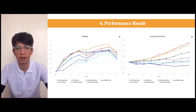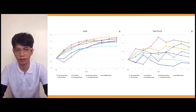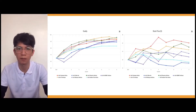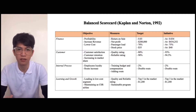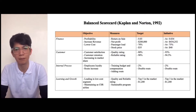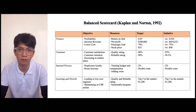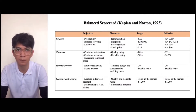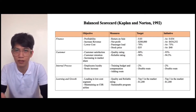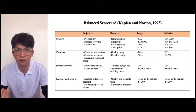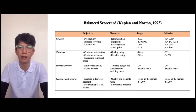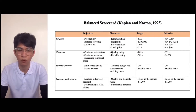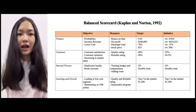Here is our performance result: reliability rank 1, cumulative net profit always rank 1, and our quality always top 3. Our stock price is also on top of the market. Next is our scorecard. Our financial objective is profitability, increasing revenue, and lower cost, measured by return on sales, net profit, passenger load, and stock price. Our customer objective is customer satisfaction, customer retention, and increasing market share, measured by quality rating and reliability rating. Our internal process objective is employee loyalty and growth increase, measured by training budget and compensation. Our learning and growth objective is leading in low-cost strategy and maintaining a CSR approach, measured by quality and reliability rating and sustainable programs. Our initiative is always beyond our target.